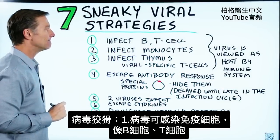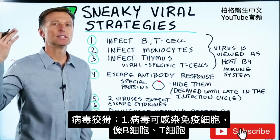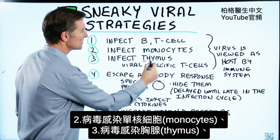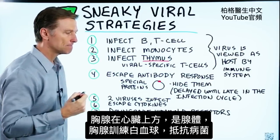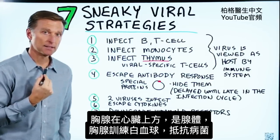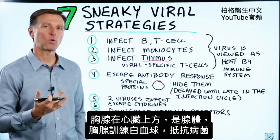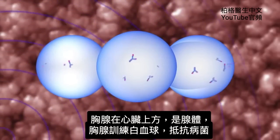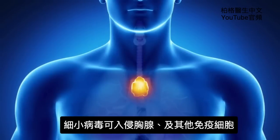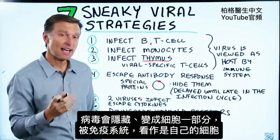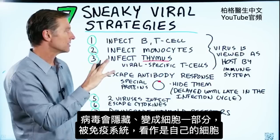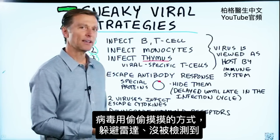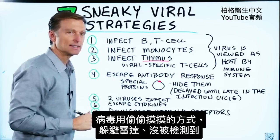Number one: viruses can infect your own immune cells — the B and T cells, the monocytes, and even your thymus and viral-specific T cells. The thymus is right above the heart, and it's a gland that acts like a training camp for your white blood cells, training them to defend against pathogens. These viruses can invade the thymus and other immune cells, become part of your cell, and be viewed as your own cell by your immune system. That's one sneaky way — they go underneath the radar and don't get detected.